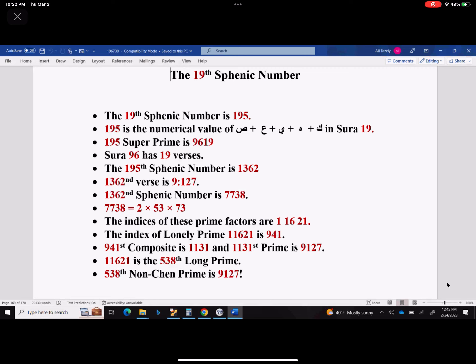Okay, so the 19th sphenic prime is 195. 195 happens to be the numerical value of Kaaf Ha Ya'insad in Surah 19, and 195th super prime is 9619, and Surah 96 has 19 verses. Remember, again, Surah 96 was the first Surah that was revealed.